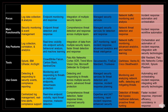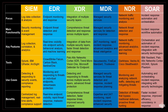In summary, SIEM, EDR, XDR, MDR, NDR, and SOAR each play a critical role in fortifying an organization's cybersecurity posture. SIEM provides real-time monitoring and analysis. EDR focuses on endpoint security. XDR offers a comprehensive view across multiple layers. MDR provides managed security services. NDR monitors network traffic. And SOAR automates and orchestrates incident response. Organizations can benefit from using a combination of these technologies to enhance their overall security defenses.